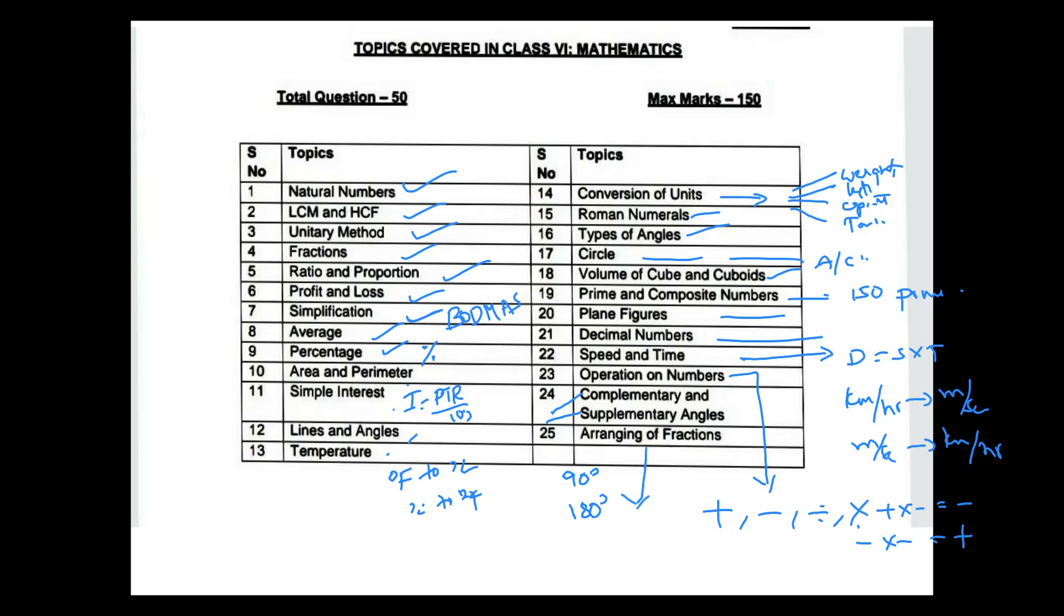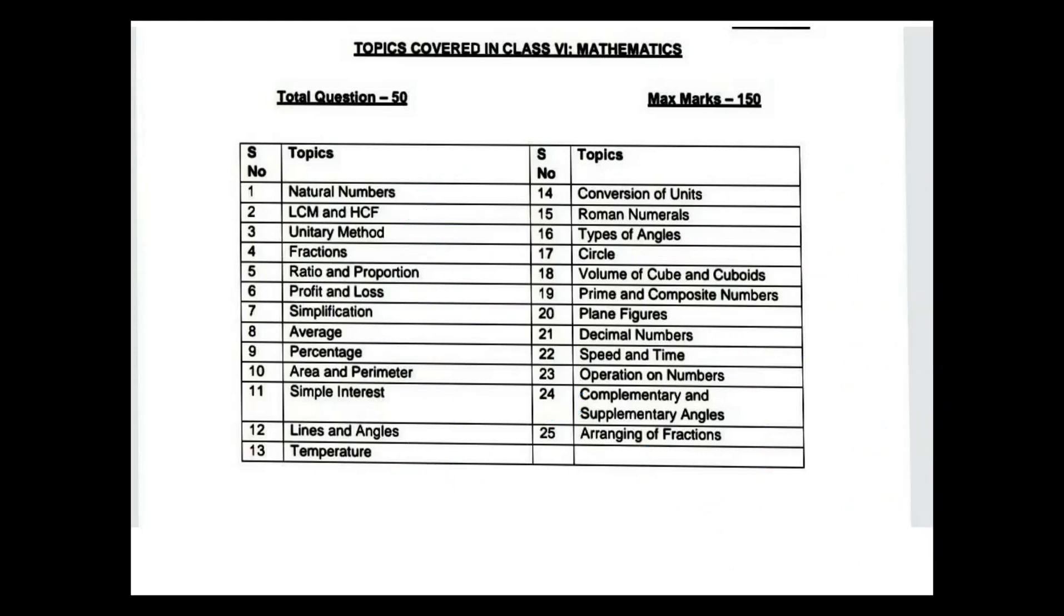Arranging fractions means ascending order and descending order. For arranging fractions, the fraction's denominator should be equal by doing LCM. These are the total topics covered in the Cynic exam. Total maximum marks 150, total questions 50. 50 into 3 is 150. There is no negative marking in the Cynic exam.